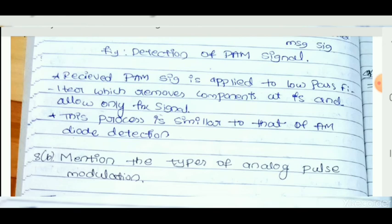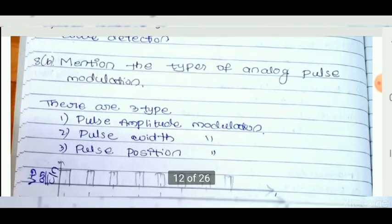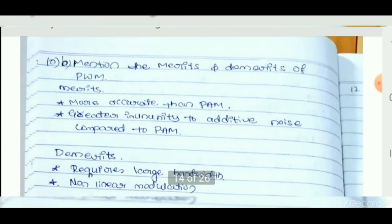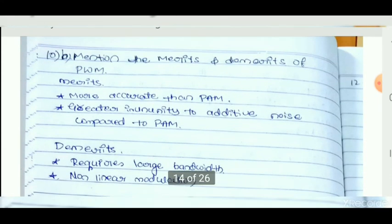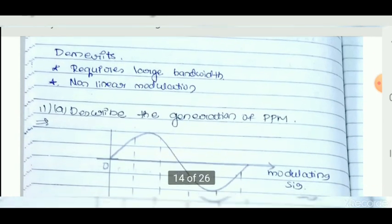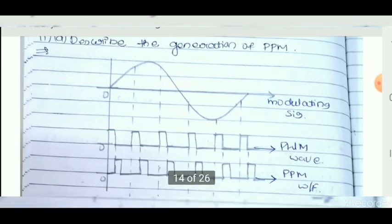The low-pass filter removes the component at Fs and allows only the Fx signal. This process is similar to that of AM diode detection. Merits and demerits of PWM: merits include being more accurate than PAM and greater immunity to additive noise compared to PAM. Demerits include requiring large bandwidth and nonlinear modulation.